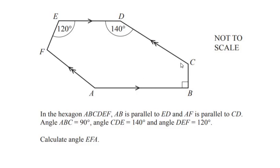In the hexagon ABCDEF, AB is given parallel to ED and AF is given parallel to CD. Angle ABC is 90 degrees, angle CDE is 140 degrees, and angle DEF is given as 120 degrees. Calculate the angle EFA, which is this part of the angle we need to find out.